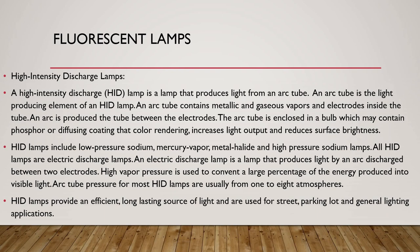The arc tube is enclosed in a bulb which contains a phosphor or diffusing coating. The color rendering increases light output and reduces surface brightness. HID lamps include low pressure sodium, mercury vapor, metal halide, and high pressure sodium lamps. All HID lamps are electric discharge lamps — a lamp that produces light by an arc discharge between two electrodes. High vapor pressure is used to convert a large percentage of the energy into visible light. Arc tube pressure for HID lamps is usually from one to eight atmospheres. HID lamps provide an efficient, long-lasting source of light and are used for street lighting, parking lots, and general lighting applications.